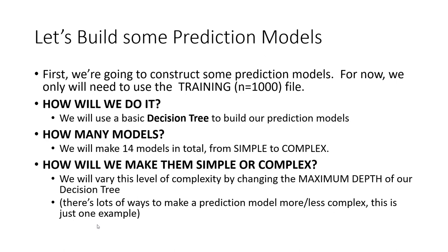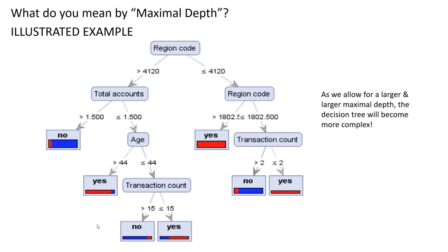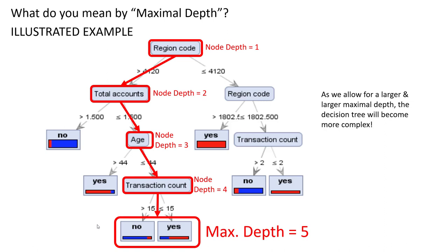Our first step is to build some prediction models using the training data set. We're going to use a decision tree to build our prediction models — 14 models in total, from simple to complex. We vary the level of complexity by changing something called the maximum depth of our decision tree. To figure out the maximum depth of a decision tree, I start at the top node and work my way down through the different nodes looking for the absolute longest chain. There is one spot where the node depth reaches four before we reach the final terminus.